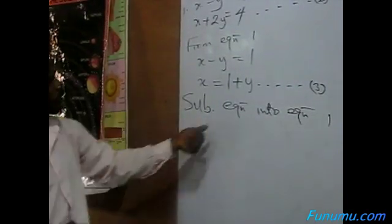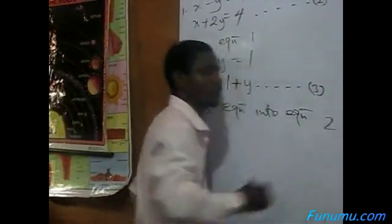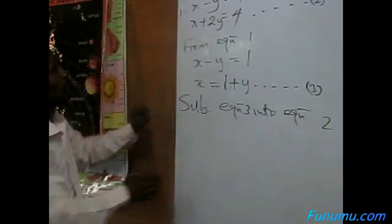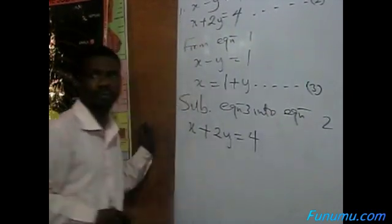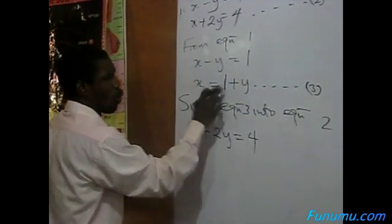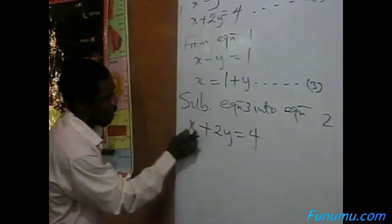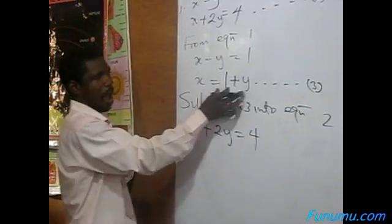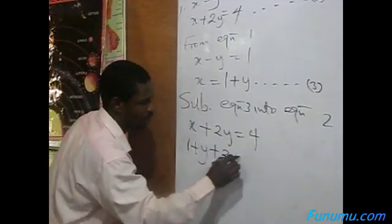Substitute equation 3 into equation 2 — sorry, into equation 2. What is equation 2? Equation 2 is: x plus 2y equal to 4. You know that your equation 3 is x equal to 1 plus y. So instead of writing x, you put 1 plus y. Remove the x and bring in the substitution. So that gives: 1 plus y, instead of x, plus 2y equal to 4.